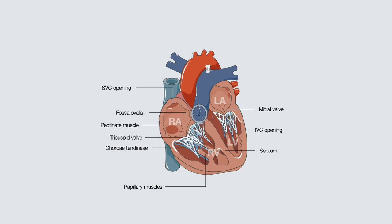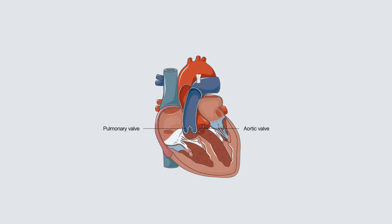During systole, blood from the right ventricle moves into the lungs via the pulmonary trunk. In the left atrium, there are openings for the pulmonary veins. Separating the atrium and ventricle is the mitral valve, which is a bicuspid valve. One can also appreciate the semilunar valves of the pulmonary and aortic valves. Also attached between the pulmonary trunk and aorta is the ligamentum arteriosum, which is a remnant of the ductus arteriosus in a fetus. In the ventricles, note the irregular muscle ridges known as the trabeculae carneae.